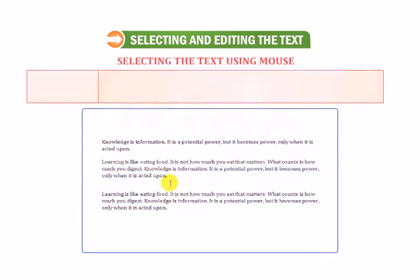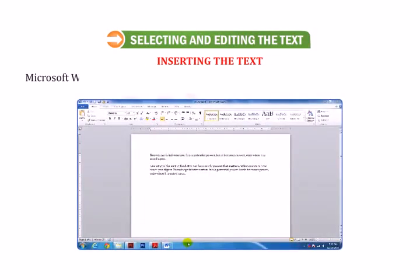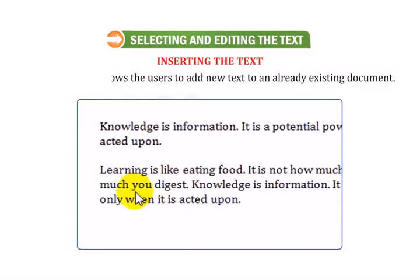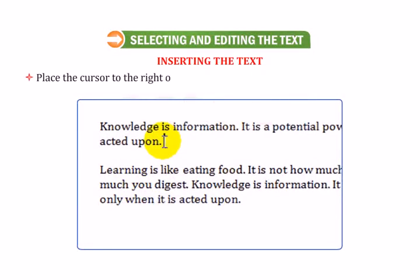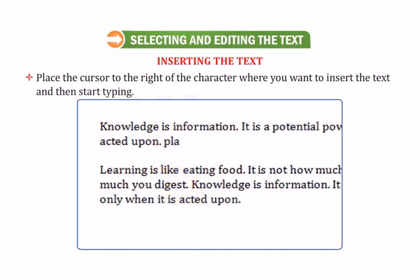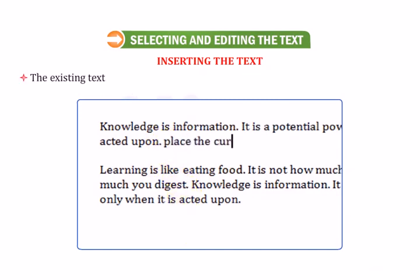Let us talk about inserting the text. Microsoft Word allows the users to add new text to an already existing document. Place the cursor to the right of the character where you want to insert the text and then start typing. The existing text which is present after the cursor will be shifted to the right side.